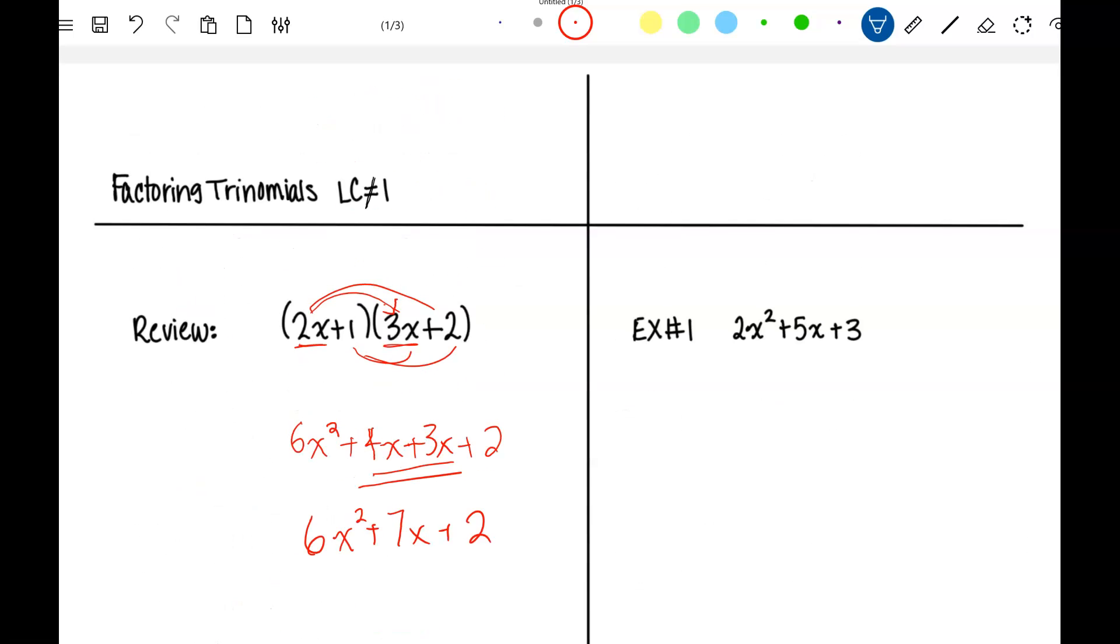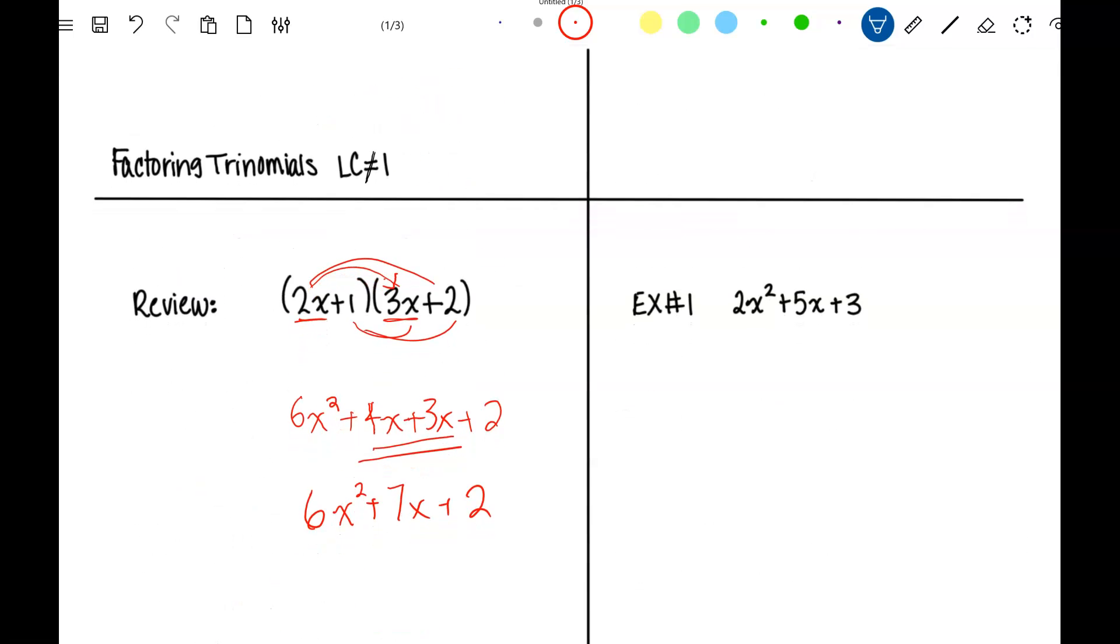So looking at example number 1, 2x squared I know is 2x times x, and 3 I could either put a 1 here and a 3 here or a 3 and a 1. I'm going to go ahead, just for sake of argument, put a 1 here and a 3 here. Checking the inside product and the outside product gives me a 7x, not what I want, I want a 5x.